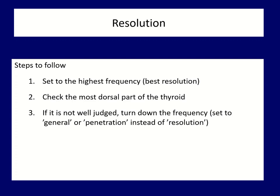The easiest and fastest way to set depth, focus, and adequate frequency is after a quick scan of both lobes searching and checking the most dorsal part of the thyroid. Wrong adjustment can either lead to incorrect nodule diagnosis or cause us to overlook slightly less echogenic nodules.